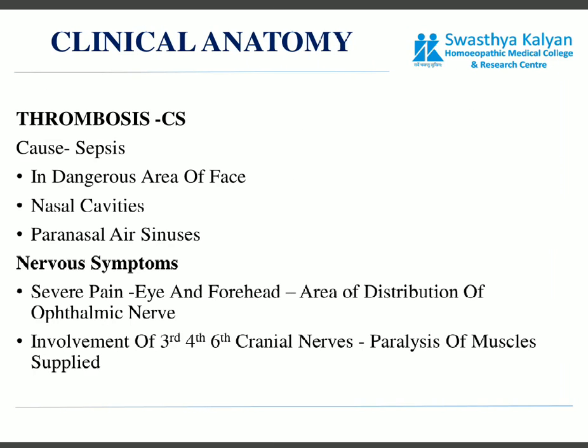Clinically, thrombosis can occur in the cavernous sinus. It is caused by sepsis — either in the dangerous area of the face, the nasal cavity, or the paranasal sinuses. Infection through these areas can transfer to the cavernous sinus via the communications and lead to thrombosis. If thrombosis occurs, there are various symptoms. The neurological symptoms include involvement of the ophthalmic nerve, because it is closely related to the sinus, causing severe pain in the eye and forehead.